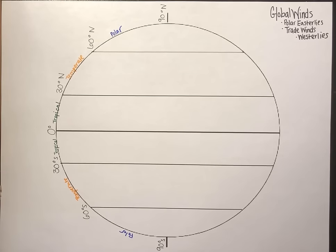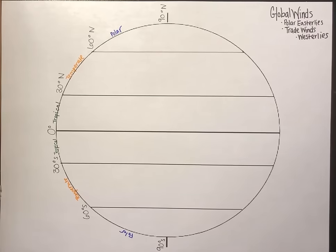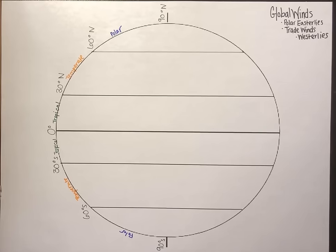This is a video explaining global winds including polar easterlies, trade winds, and westerlies. Please watch the climate zones video first before watching this video — it will help you understand global winds better. I've attached a similar Google sheet if you want to print it out and draw with me as I go through global winds.